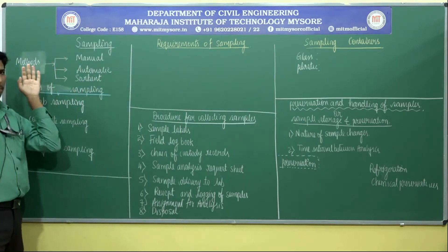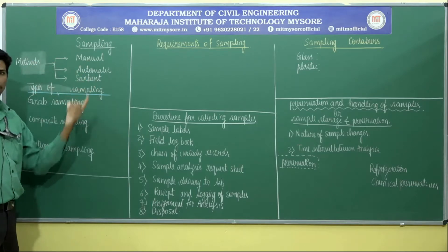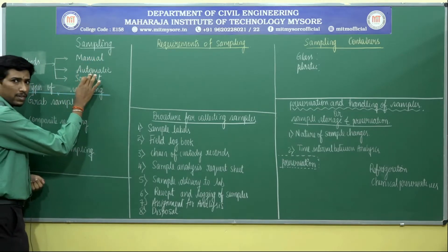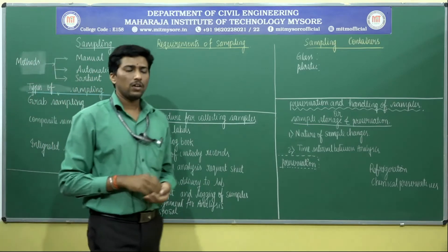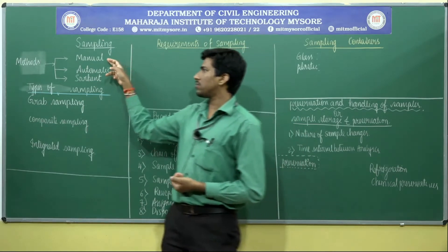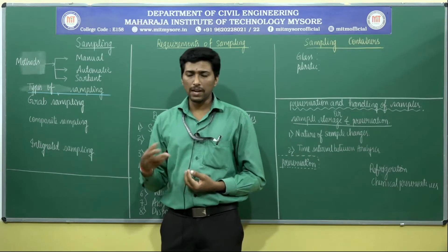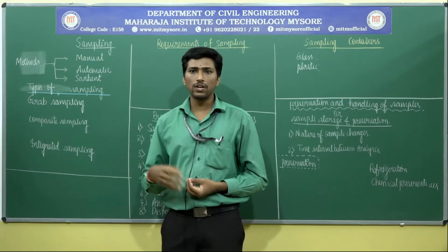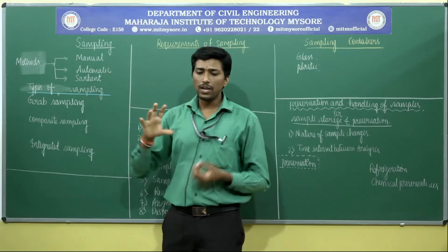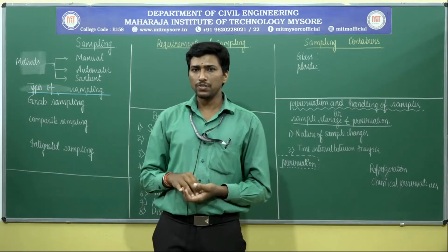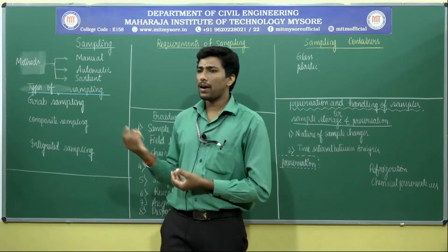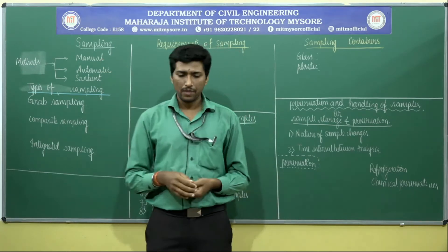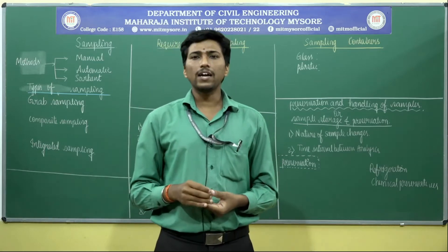The first consideration is the choice of the method of sampling. There are three methods: the first is manual sampling, the second is automated sampling, and the third is sorbent type of sampling. Manual sampling refers to the collection of samples at a place — either a waste stream, industrial waste stream, a river, or a lake — by an individual with skill or expertise, along with colleagues or co-workers.